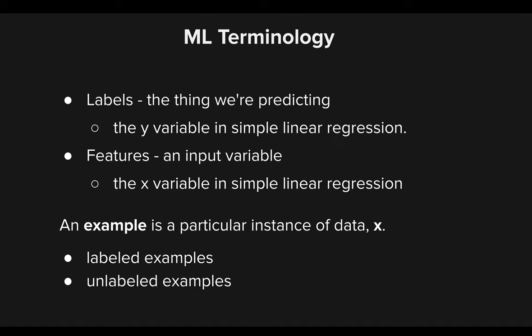Some ML terminology we'll be covering throughout this series: Labels are the thing we're predicting — the y variable, our output. A low-level example would be taking a picture of a cat or a dog and asking, is it a cat or a dog? Our inputs in that case are the picture. The input variables are known as features in machine learning. In the example of predicting whether a picture shows a cat or a dog, the feature would be the picture and all the items and objects in it.